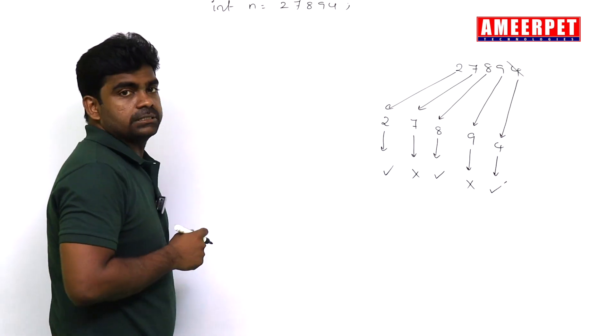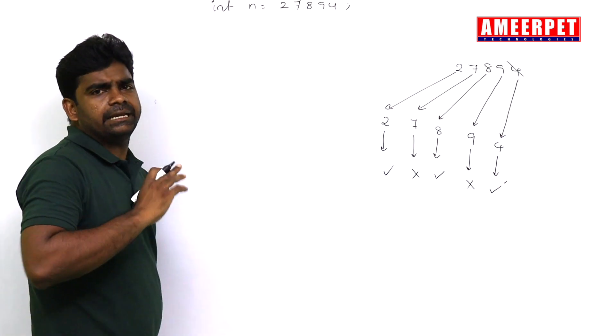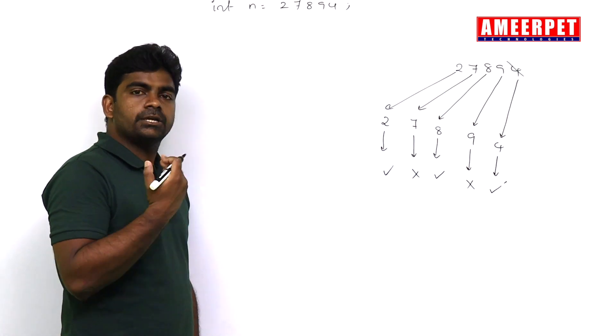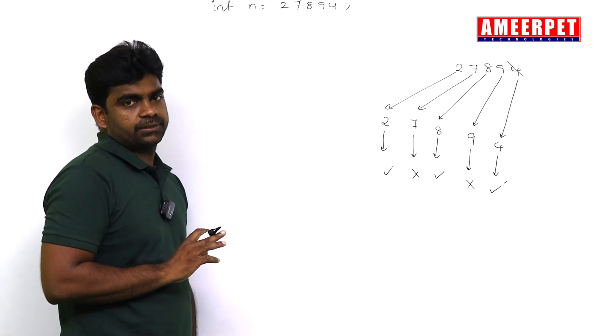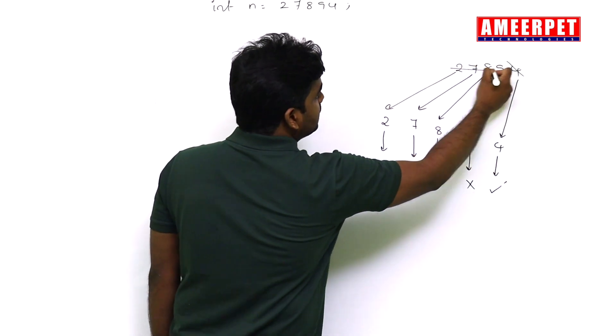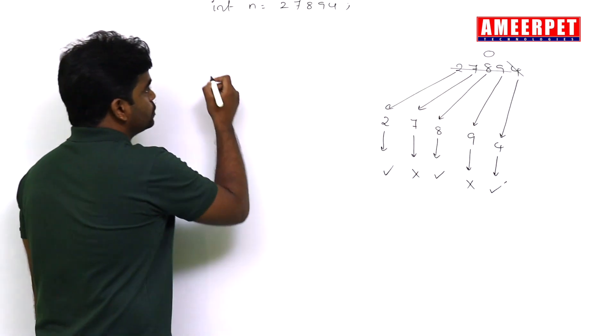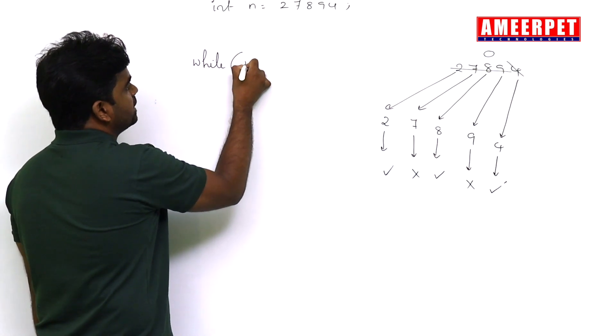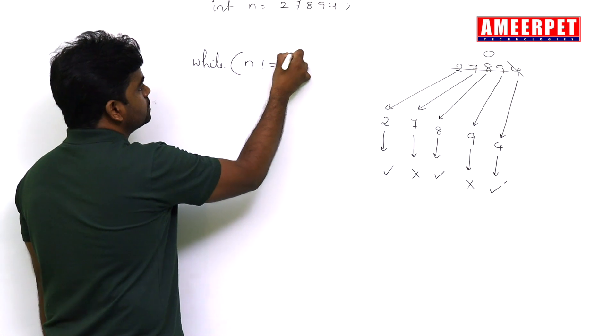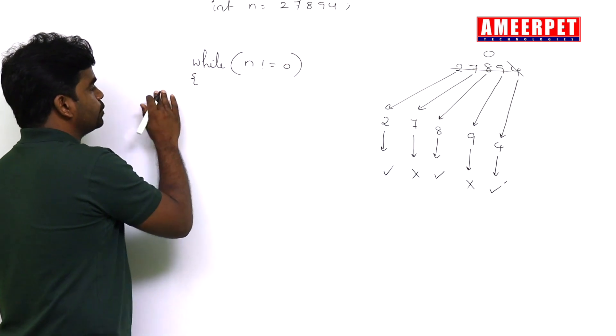Here first take the n value as 27894 or any number. You can read it or change it here directly. We need to repeat the loop until n value becomes zero.